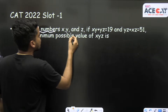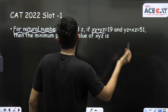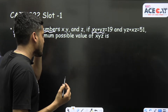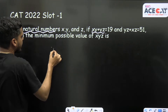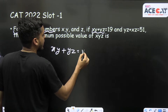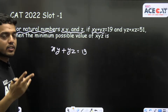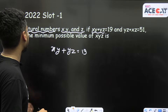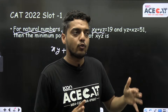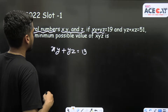For natural numbers x, y, and z, if xy + yz = 19 and yz + xz = 51, then what is the minimum possible value of xyz? Two equations are given. Since x, y, z are natural numbers, they cannot be negative or zero — natural numbers start from 1, 2, 3, 4 and so on.